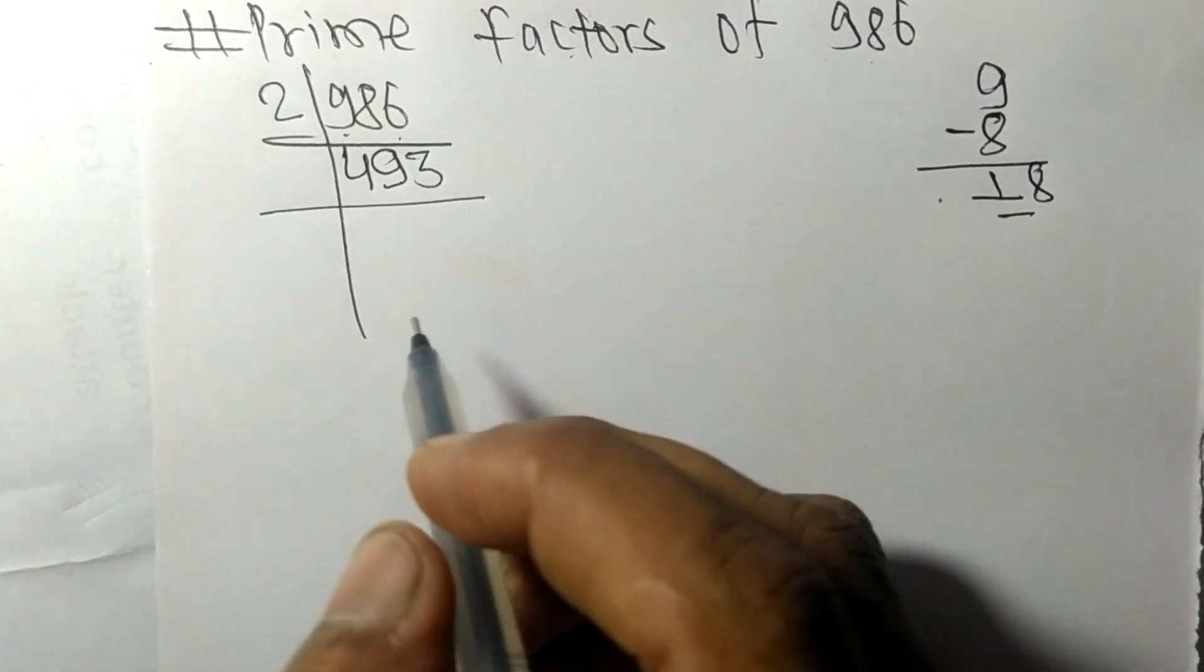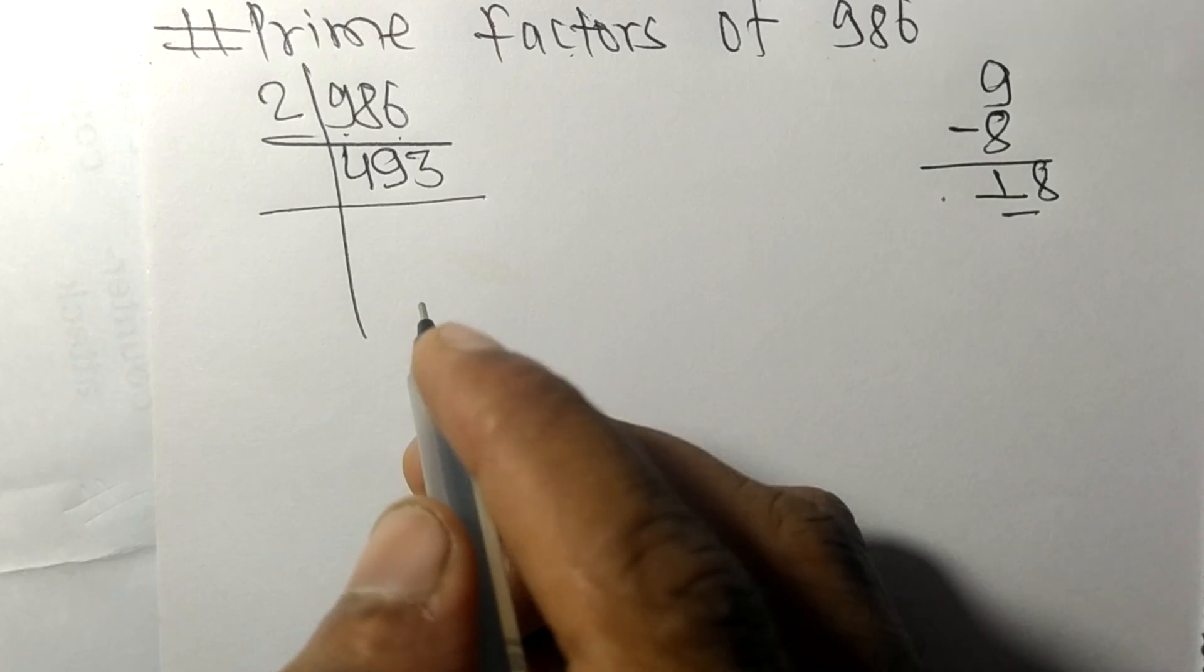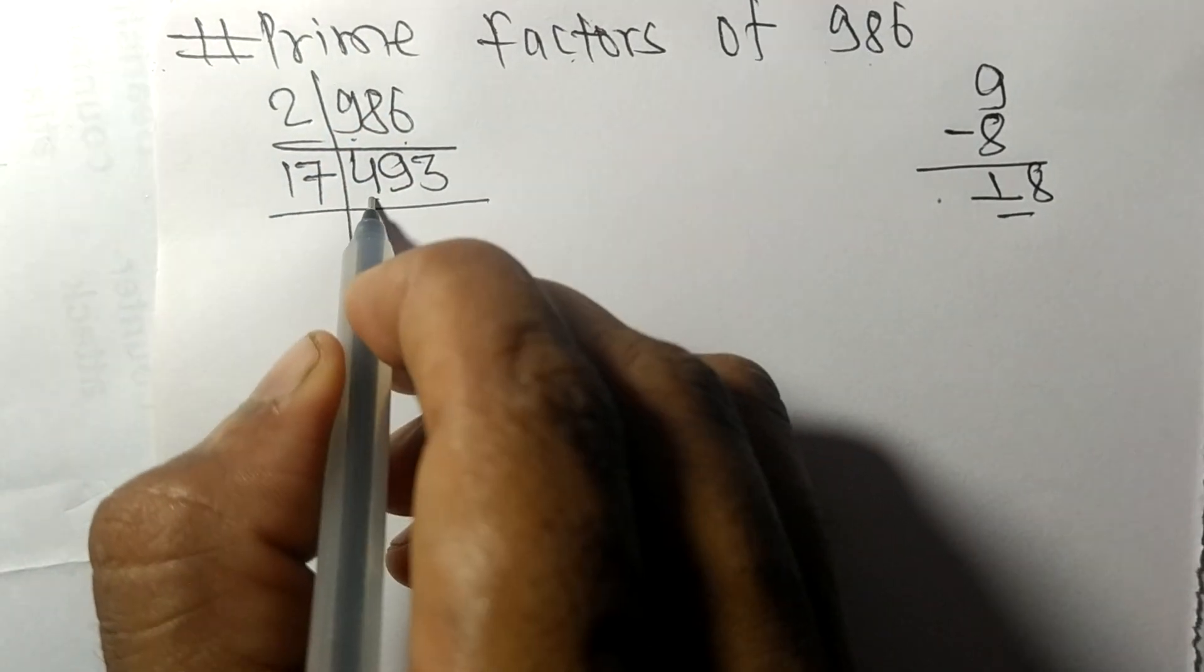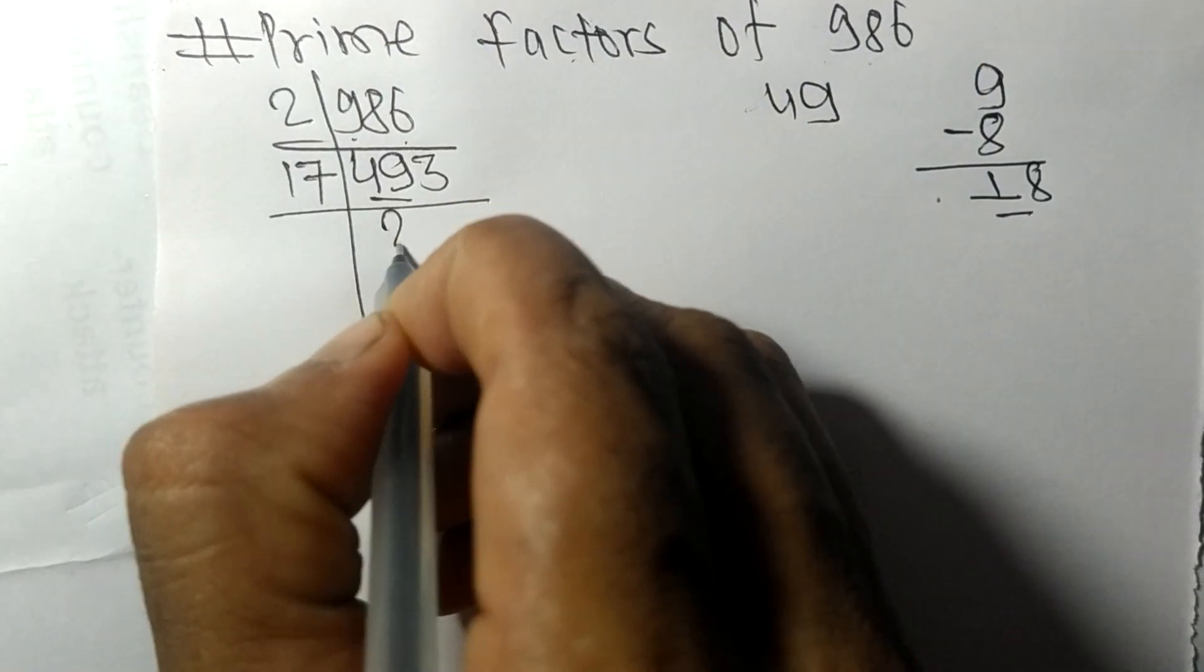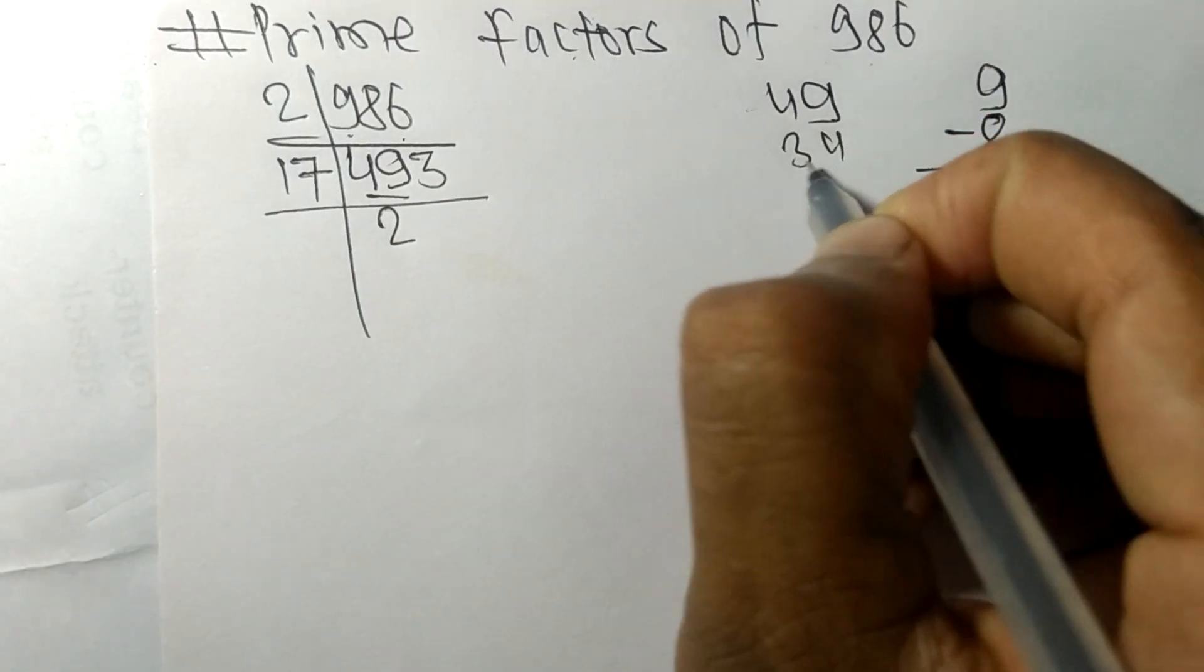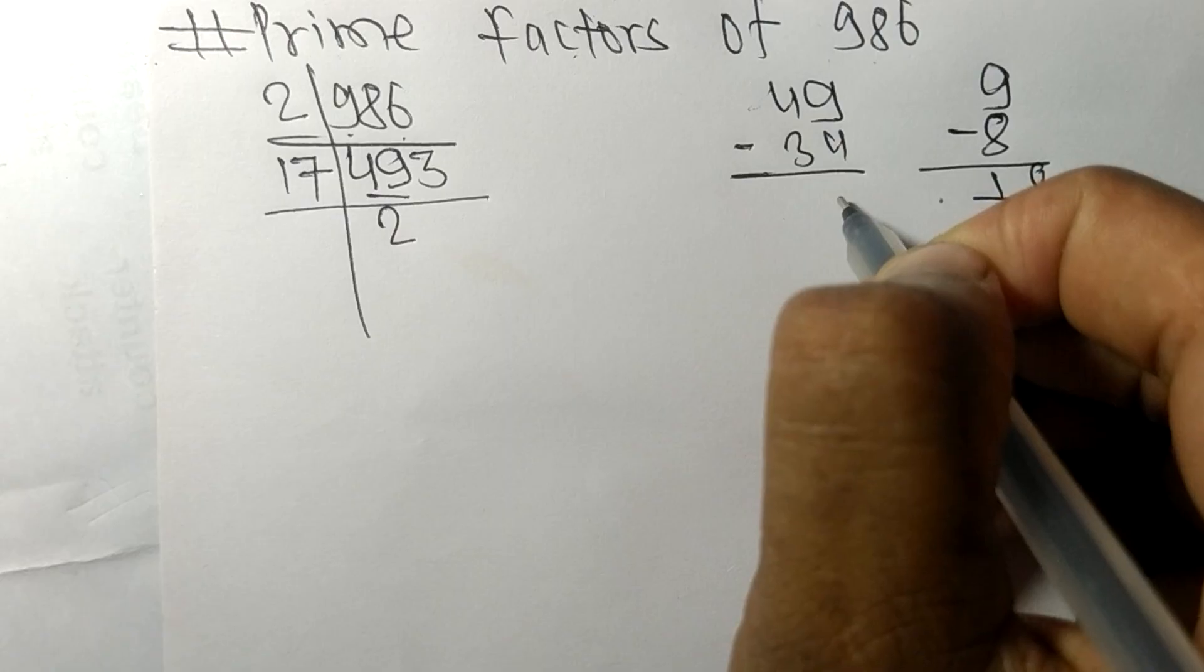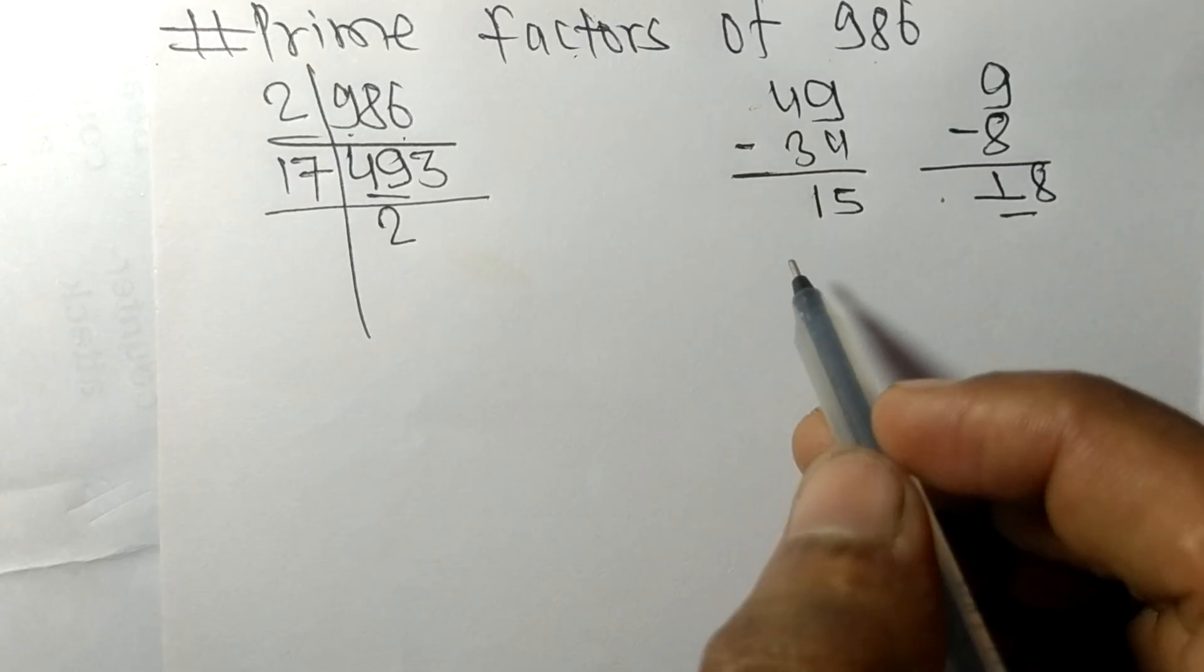Now we have 493, which is exactly divisible by 17. First we have 49. 17 times 2 equals 34. On subtracting, 9 minus 4 equals 5, and 4 minus 3 equals 1, giving us 15.